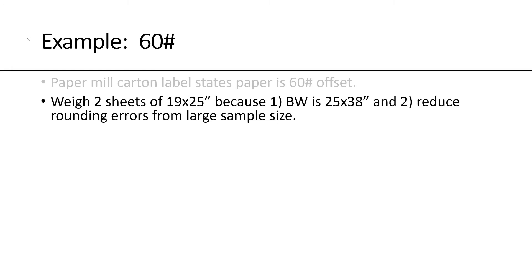Let's take a look at an example here on 60-pound offset paper. We have a carton or case from the paper mill, and the label says that it's a 60-pound offset paper, which means it's uncoated. We're going to take two sheets of 19 by 25 and weigh them. We're going to take two sheets because two sheets comes out to 25 by 38, which is the same as the basis size.